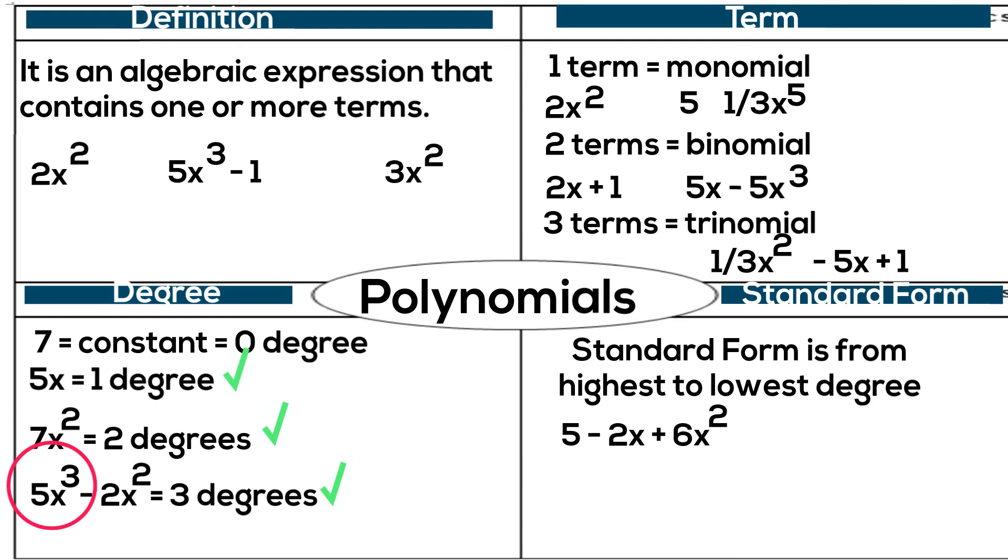Next we will list them, we will look at the degrees and list them from greatest to smallest. The 5 is zero degree, the 2x is 1 degree, and the 6x is squared. So, the 6x squared is listed first, followed by negative 2, and then the positive 5. So this is in correct standard form.